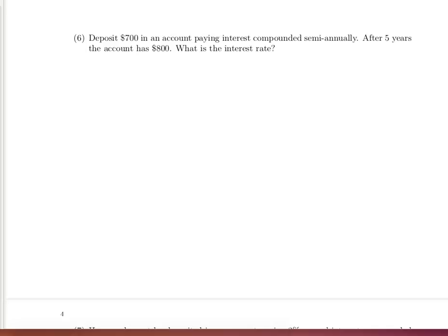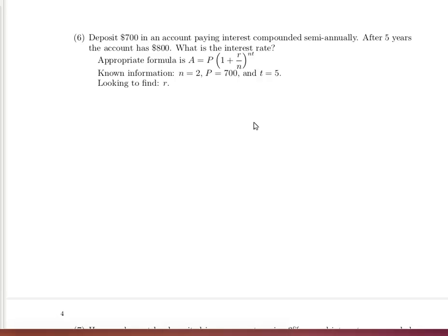The other variables need to be defined in the problem so we can solve. The known information is n equals 2 because we're compounding semi-annually. We know the present value is 700, that's how much we're depositing. After 5 years we have 800, so the future value is 800 and the time is 5 years. We're looking to find r.